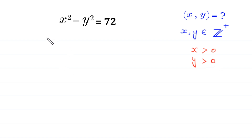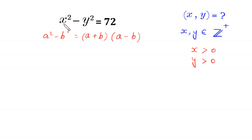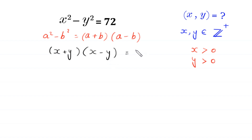By using the algebraic identity, a squared minus b squared is equal to a plus b times a minus b, this x squared minus y squared will become x plus y times x minus y is equal to 72. Now we have two factors on the left side, so we factorize 72 as a product of two numbers.